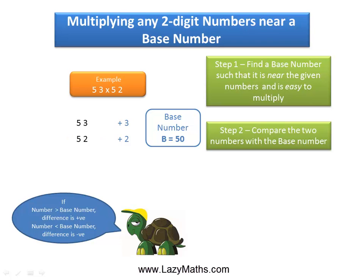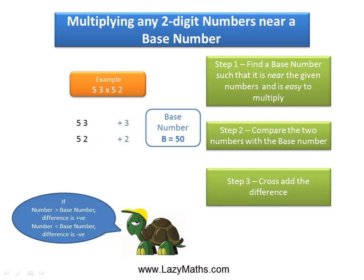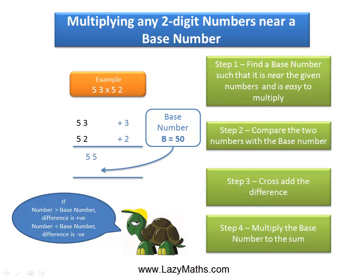The next step is to cross-add these differences. We take 53 and add plus 2 to it — 53 plus 2 is 55. Or we can take 52 and cross-add plus 3 to it. Either way, we get 55 as the sum. The next step is to multiply the sum 55 with the base number 50: 55 times 50 is 2750.